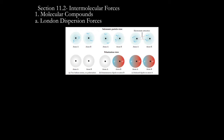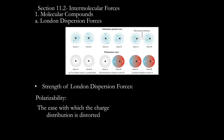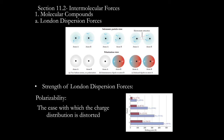To compare the strength of London dispersion forces between two compounds or atoms, we need to discuss polarizability — the ease with which the charge distribution is distorted. Basically, the more electrons an atom or molecule has, the better able it is to create that temporary dipole. It is more polarizable, meaning you can shift more electrons to create a partial positive and partial negative charge. So the more electrons an atom or molecule has, the stronger its London dispersion forces.